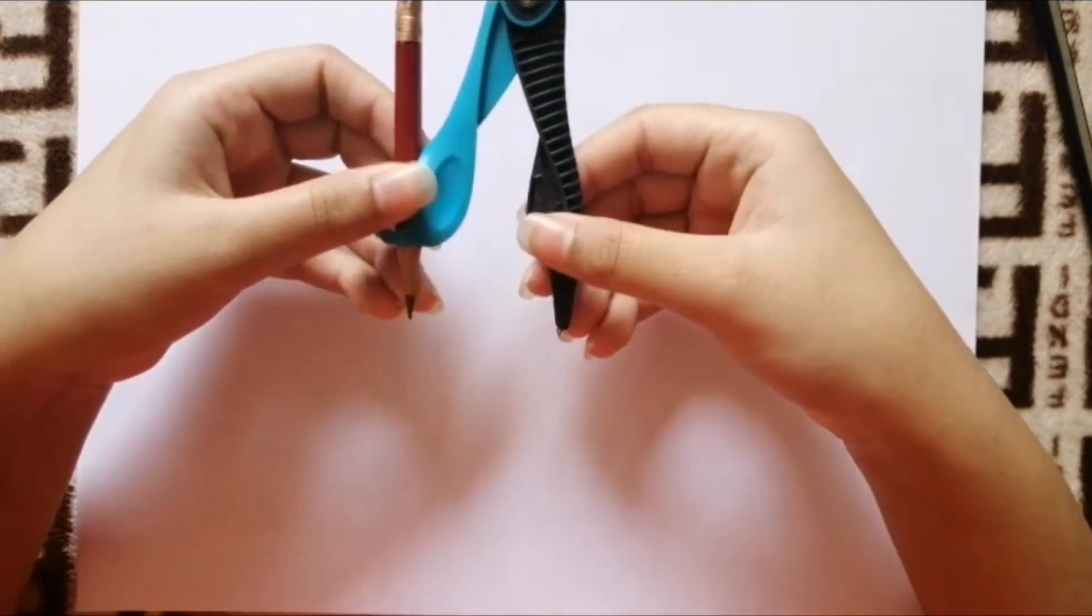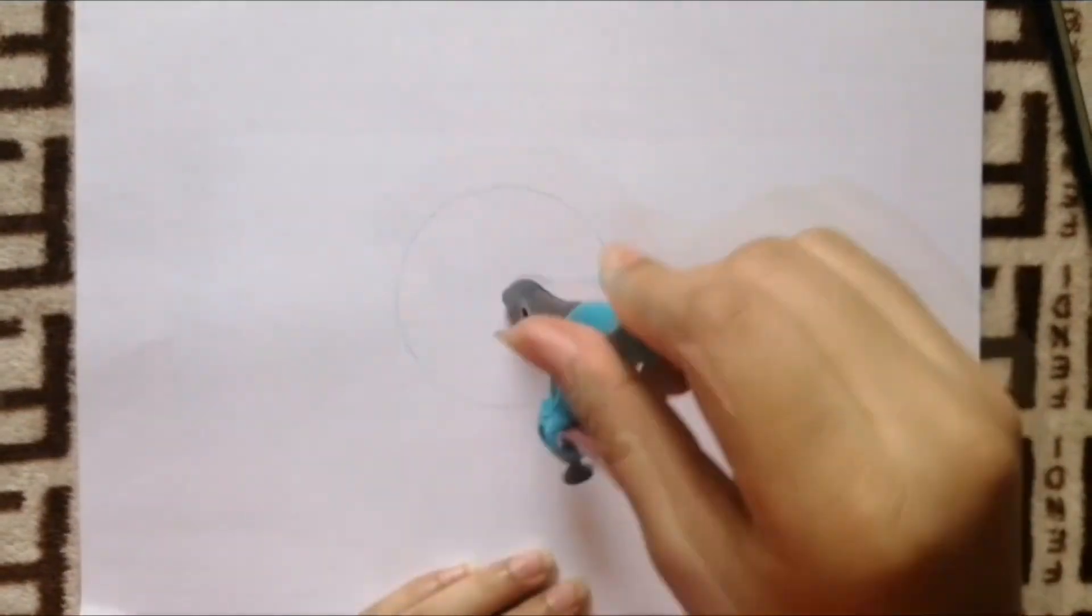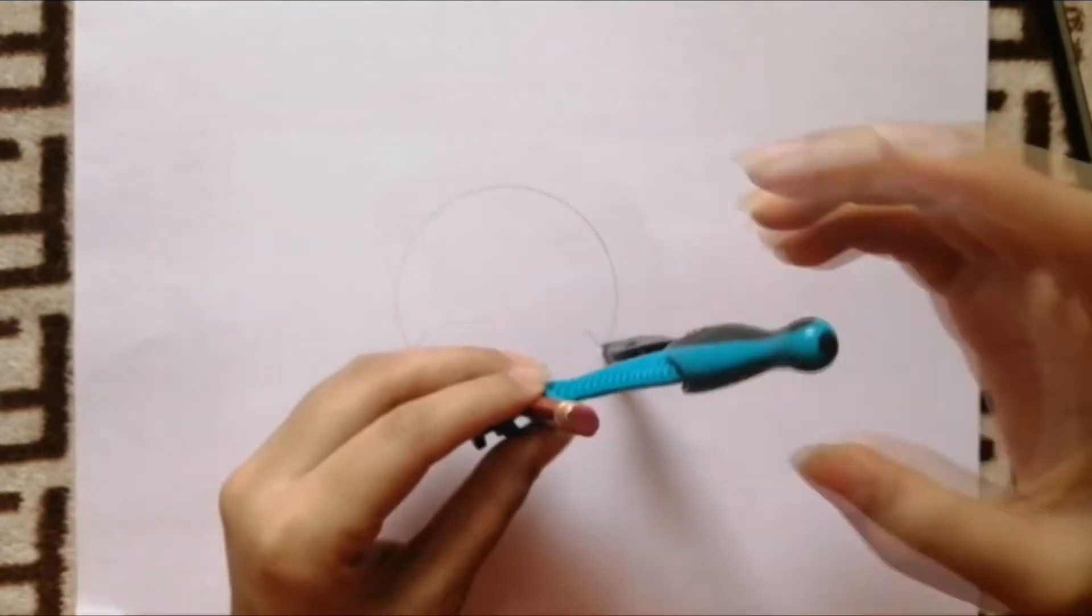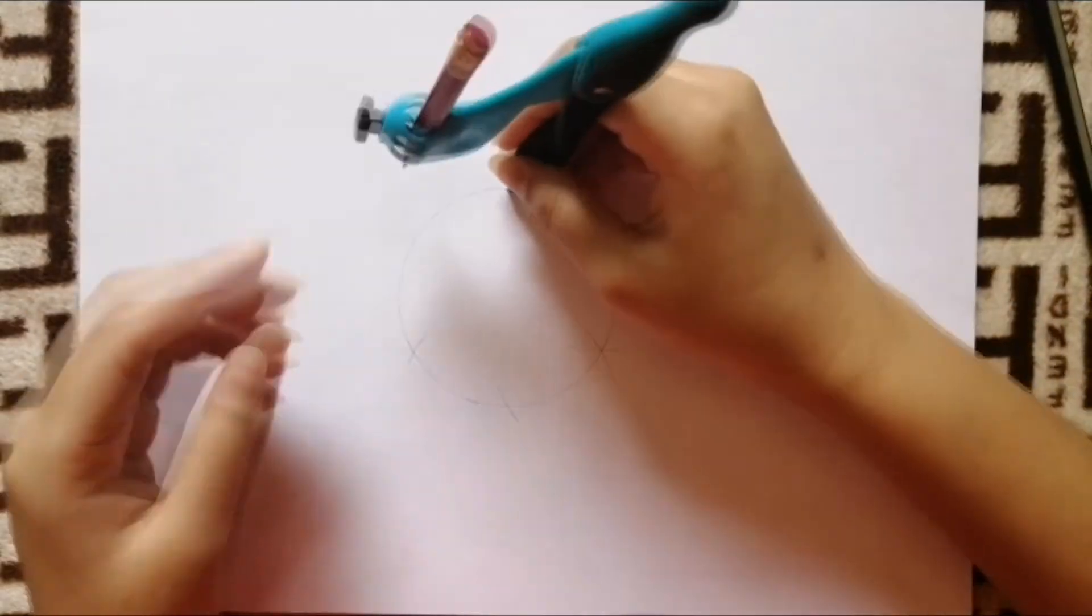The second way of drawing a grid is using only a compass. First, draw a circle using a compass, and then from any point on the circle, cut two arcs on the circle. Then from any of these arcs, cut two more arcs and continue doing this until you get six cross shapes on the circle.